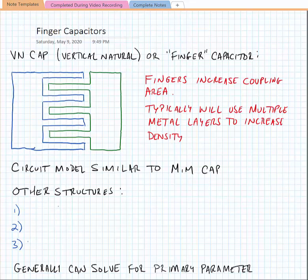Fingers increase the effect of coupling area. Our capacitance is arising from the metal separation between the fingers and typically it will use multiple metal layers to increase the capacitance density. The circuit model for this structure is similar to the MIM capacitor.